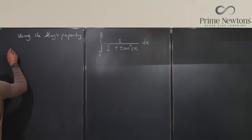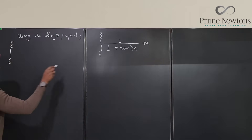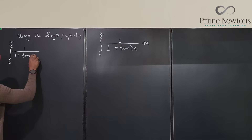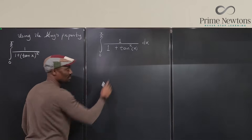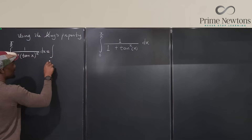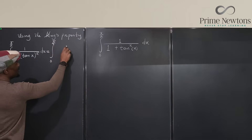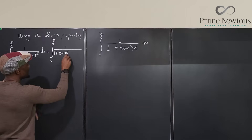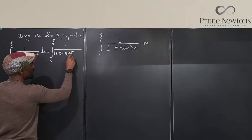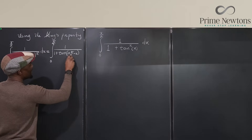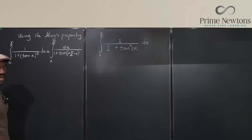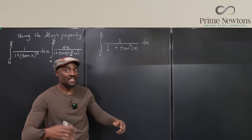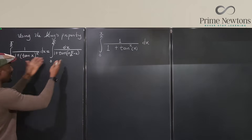So we know that the integral from zero to pi over two of one over one plus tan(x) to the pi, dx, is the same thing as the integral from zero to pi over two of one over one plus tan(pi over two minus x) to the pi, dx. Using the King's property, since it's a definite integral, we don't care whether this function is even or odd — we're stating that these two expressions are exactly the same thing.